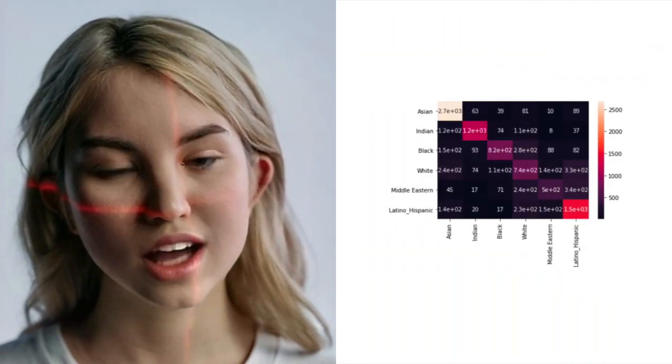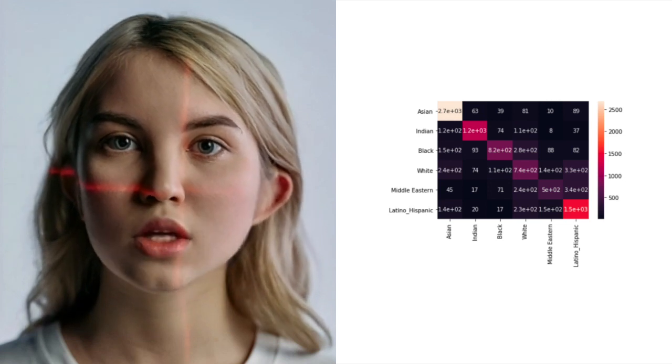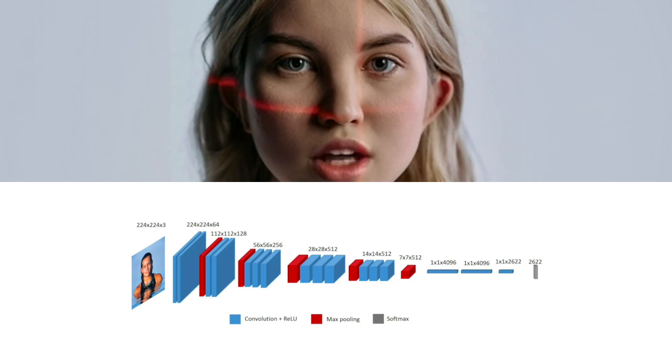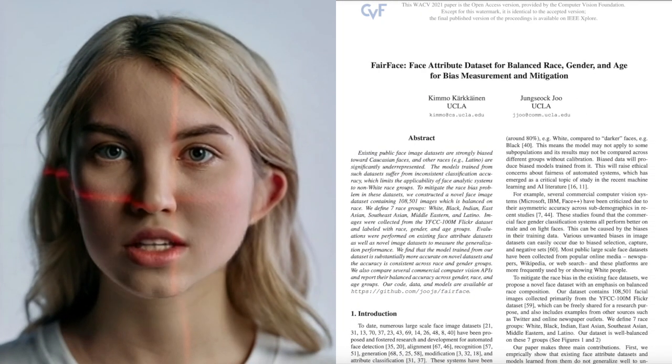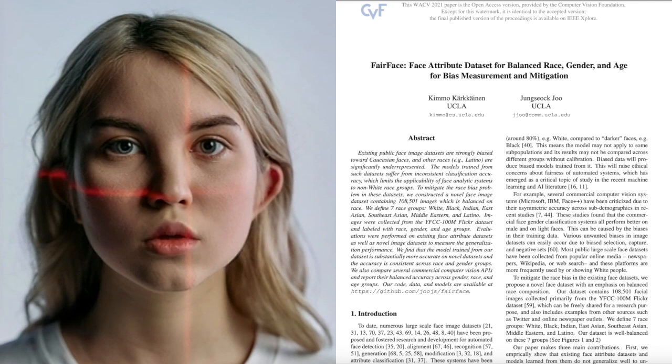In addition to age, gender, and emotion detection, the facial attribute analysis module also includes race and ethnicity prediction. This feature can be used to identify a range of races such as Asian, Indian, Black, White, Middle Eastern, and Latino-Hispanic. The race prediction model is built on the VGG Face model and trained on the FairFace dataset, created by researchers of the University of California, Los Angeles. This can be useful in applications such as healthcare.